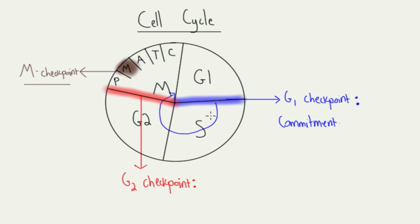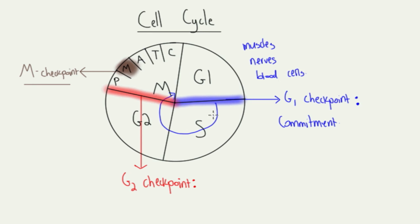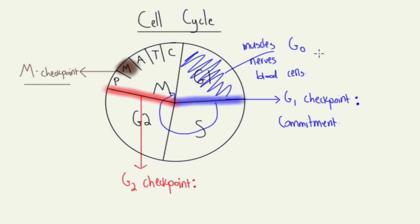Some cells don't ever want to divide, like muscle cells, neurons — neurons tend to not divide — and blood cells. Red blood cells don't divide either. Since they never divide, they're frozen in here because they never make it through this checkpoint. If you're frozen at the G1 checkpoint, we say that you're permanently in something called G0. If you ever see G0, that means that's just a cell that does not divide.